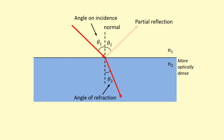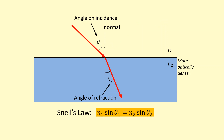There will be some partial reflection and we're going to ignore that for now. To calculate the angles of incidence and refraction, we use Snell's law, where n1 and n2 are the refractive indices of medium 1 and medium 2 respectively, and theta 1 and theta 2 are the angles between the rays and the normals in their respective mediums.